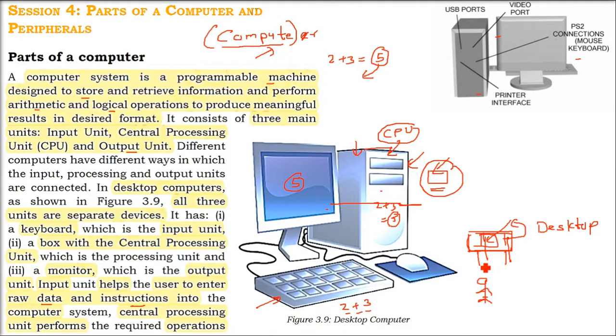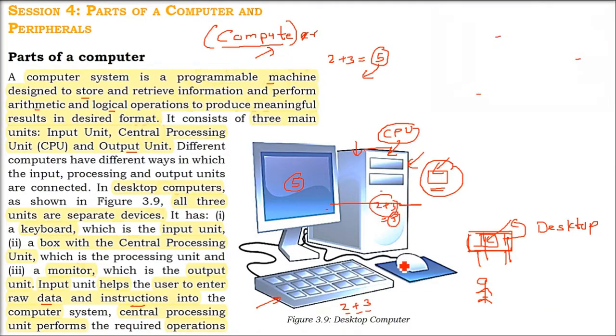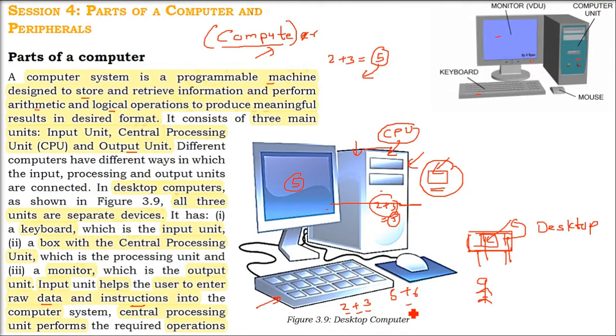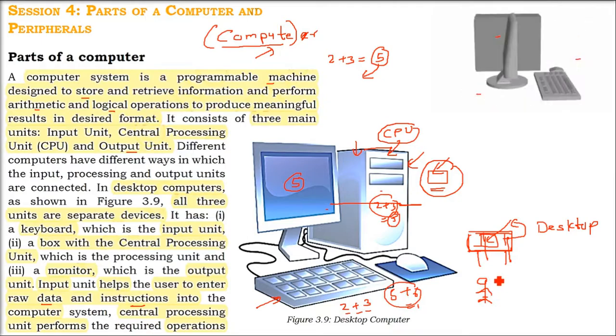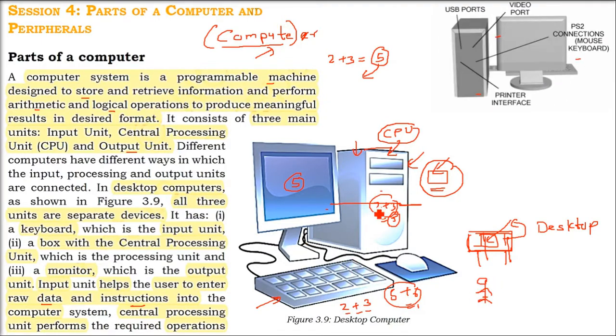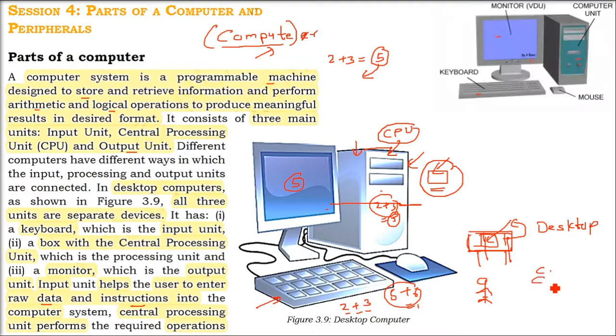So you enter certain data, certain instruction and this instruction is understood by the computer. For example, 2 plus 3 is 5 and 6, 5 plus 6 has to be 11. These are the data 5 and 6 you are giving. Instruction is that you have to add.